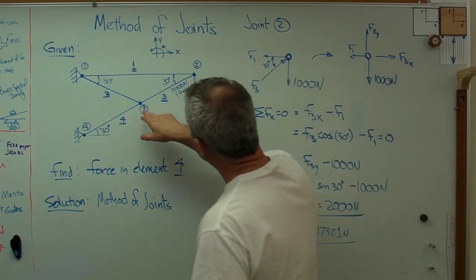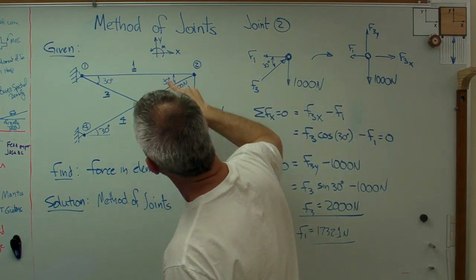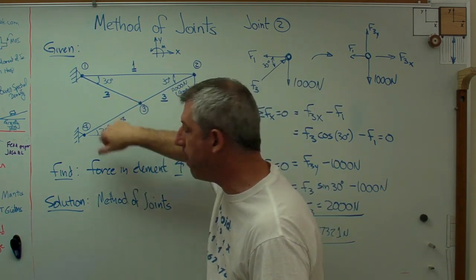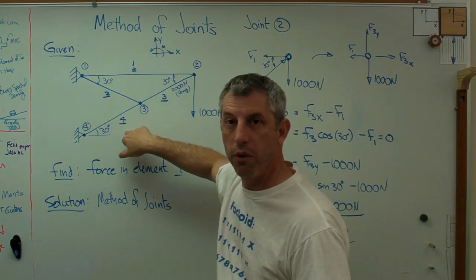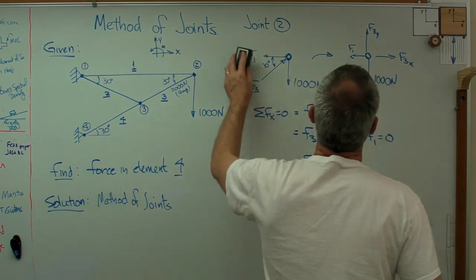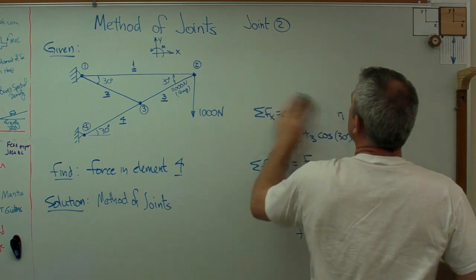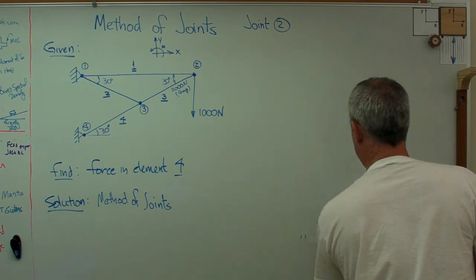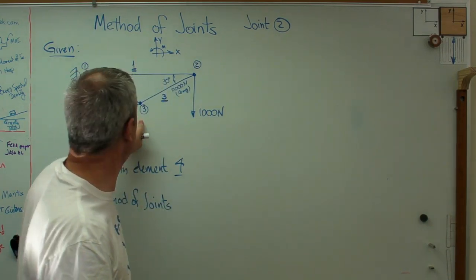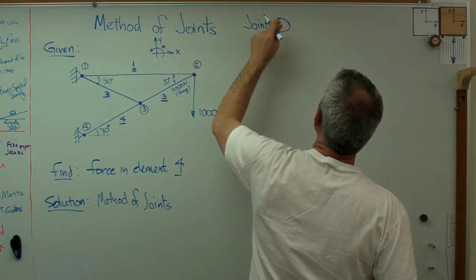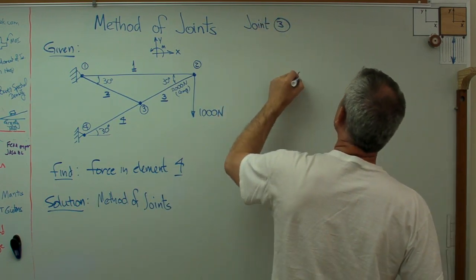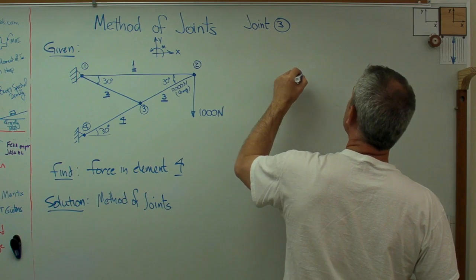The next thing I want to do is go down to the next joint, which is number three. If I solve for the forces at joint three, I'm going to get the force in beam four. That's what I want. So just to clear out some space on my board here, I'm going to do this. Looking for the forces on joint three.